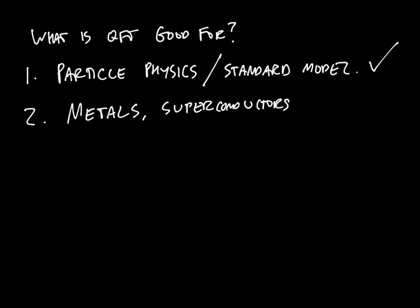It turns out the low energy fluctuations of electrons in metals are described by something called Fermi liquid theory. And it turns out that superconductors are actually described by an analog of the Higgs mechanism that you're going to study later on in this course. So if you care about things like condensed matter physics, metals, superconductors, and so on, you do need to know quantum field theory.